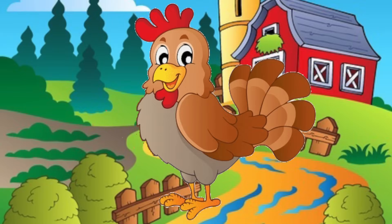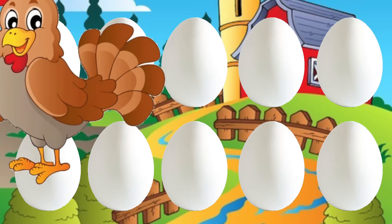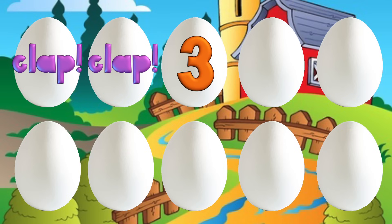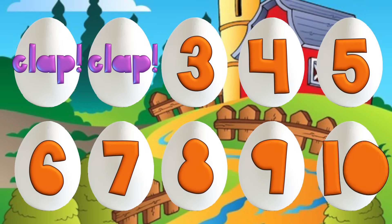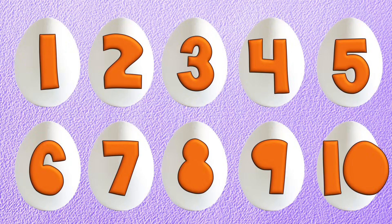There was a hen who laid some eggs. Can you help and count them? [clap], [clap], 3, 4, 5, 6, 7, 8, 9, 10. Chicken jigs hatching from 10. Hen eggs laid by hen.